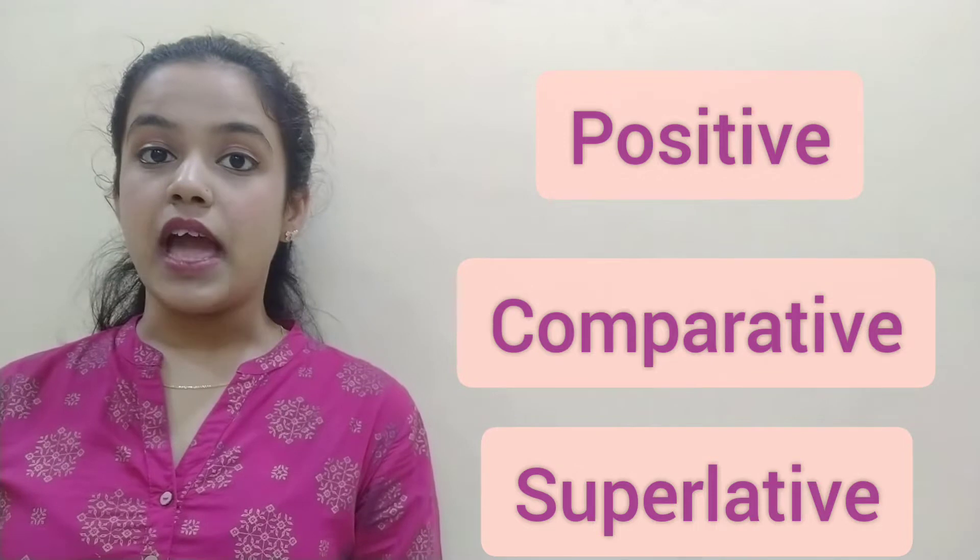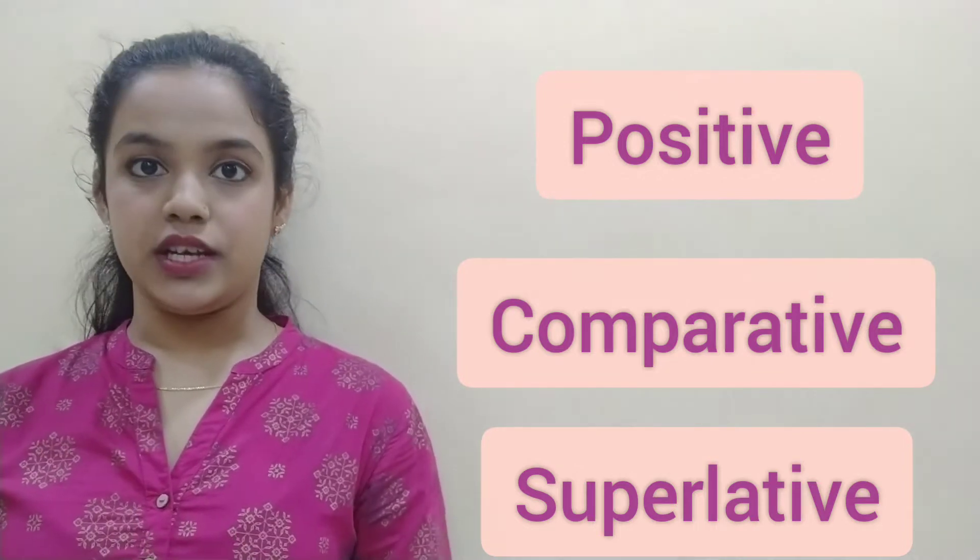Most adjectives have three different forms of comparison, or degrees of comparison: positive, comparative, and superlative. In this video I am going to show you how to form comparative and superlative degree out of the positive degree. There are five simple rules to form comparative and superlative degree of comparison.